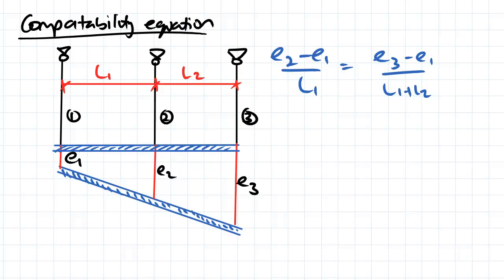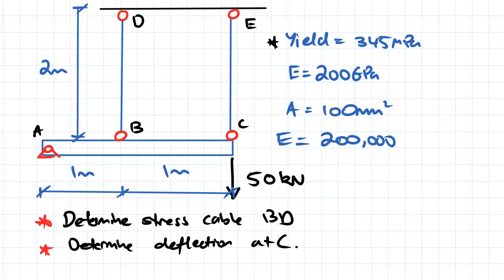Let's have a look at a question that uses the compatibility equation. We've got here a rigid beam with two steel wires attached to it, and we've got a load of 50 kilonewtons acting on the right-hand side. We've also been given some of the material properties here.